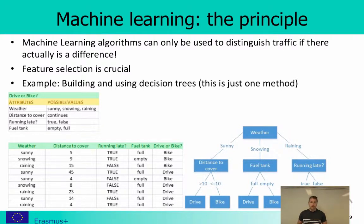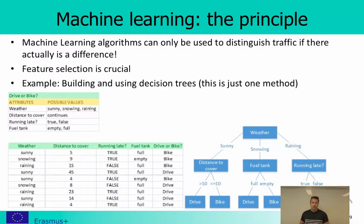Of course you can discuss whether these are the correct features, and also whether the values are correct. But this is something we need to select before we apply the algorithm. Based on this description, we take a look at some labelled data. The first observation, for example, is: it's sunny, there is a distance of five kilometers, we are running late — yes — and we have a full fuel tank.